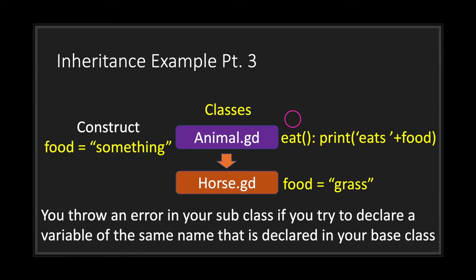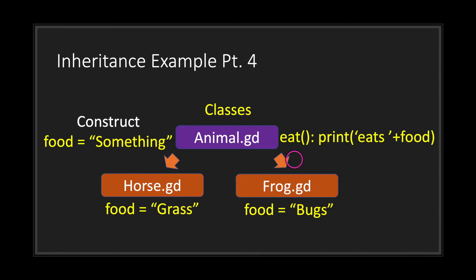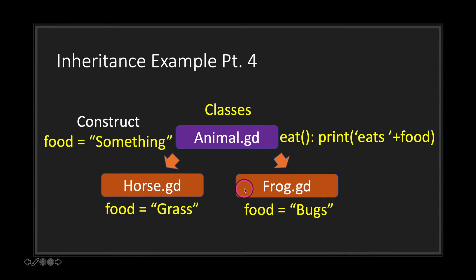Now if we were to access the method eat, instead of printing 'eats something' what we will print out is 'eats grass.' The real power of inheritance comes from the fact that you can have multiple classes as subclasses and they can all inherit from a single base class. For example, the horse class assigns food to 'grass' through the constructor method, and in the frog class we pass 'bugs' into the food variable through the constructor method as well.